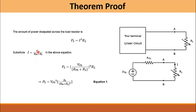The expression for the current is derived from the voltage source divided by the total resistance in the series circuit, which is equal to R_Thevenin plus R_L. By substituting the value of the current into this equation, the expression for the power absorbed by the load is obtained.